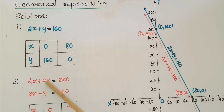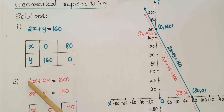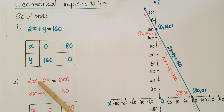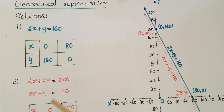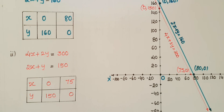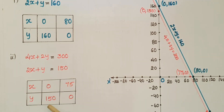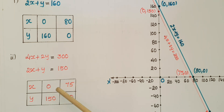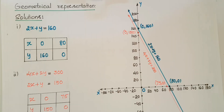The second equation is 4x + 2y = 300. We can simplify this by dividing by 2: 2x + y = 150. Now find two solutions: if x = 0, then y = 150; and if y = 0, then x = 150 ÷ 2 = 75. So the two coordinates for this equation are (0, 150) and (75, 0).